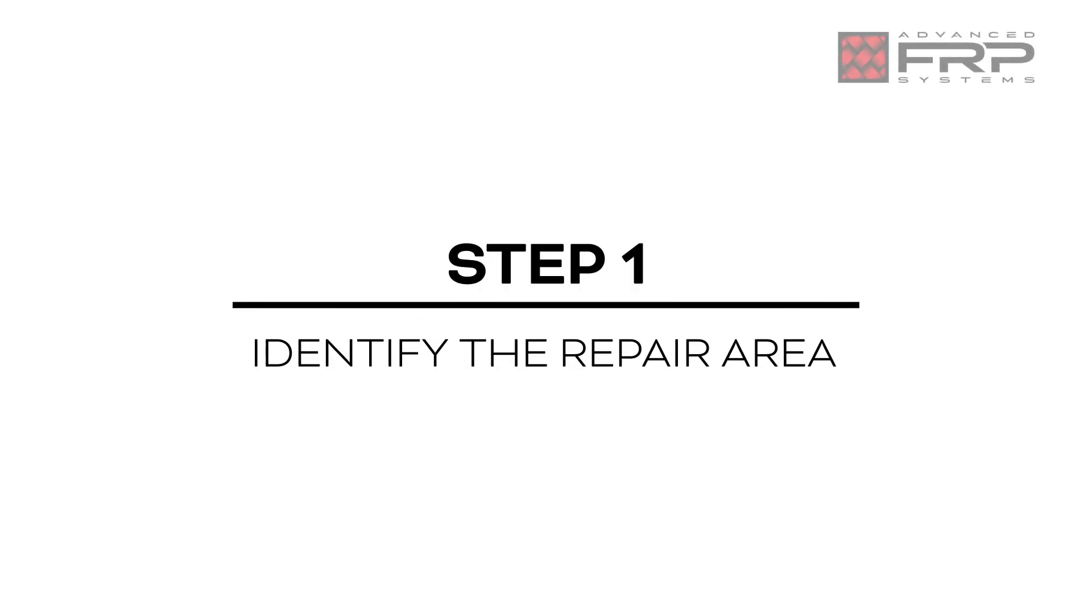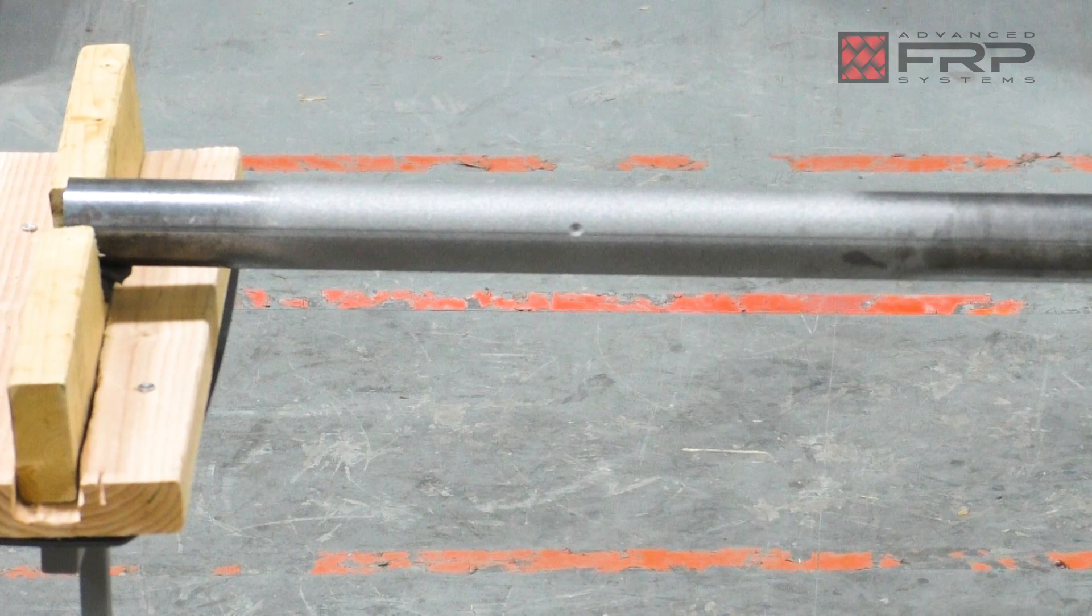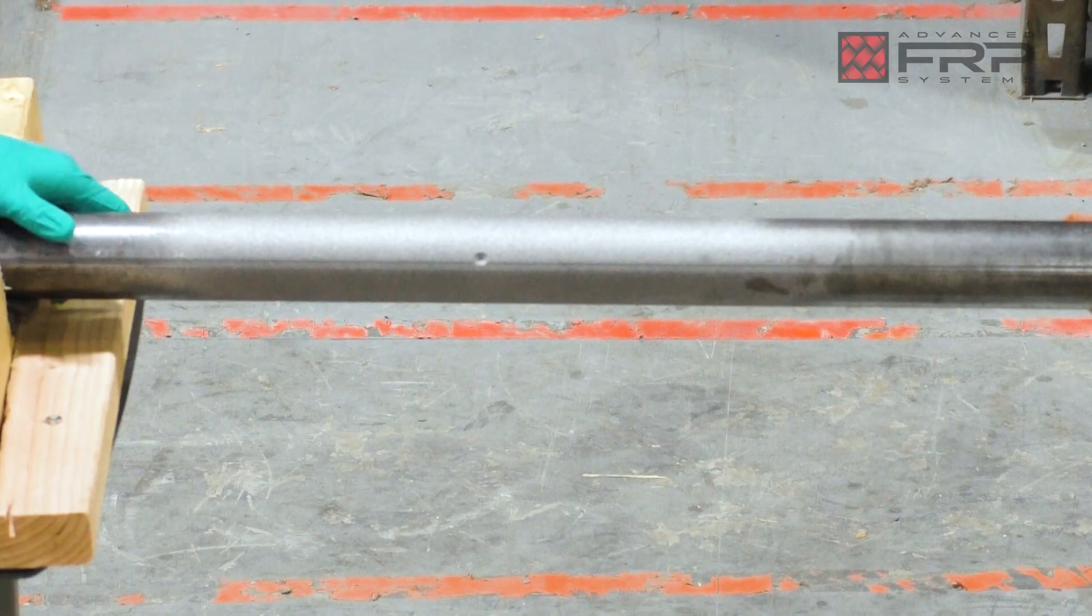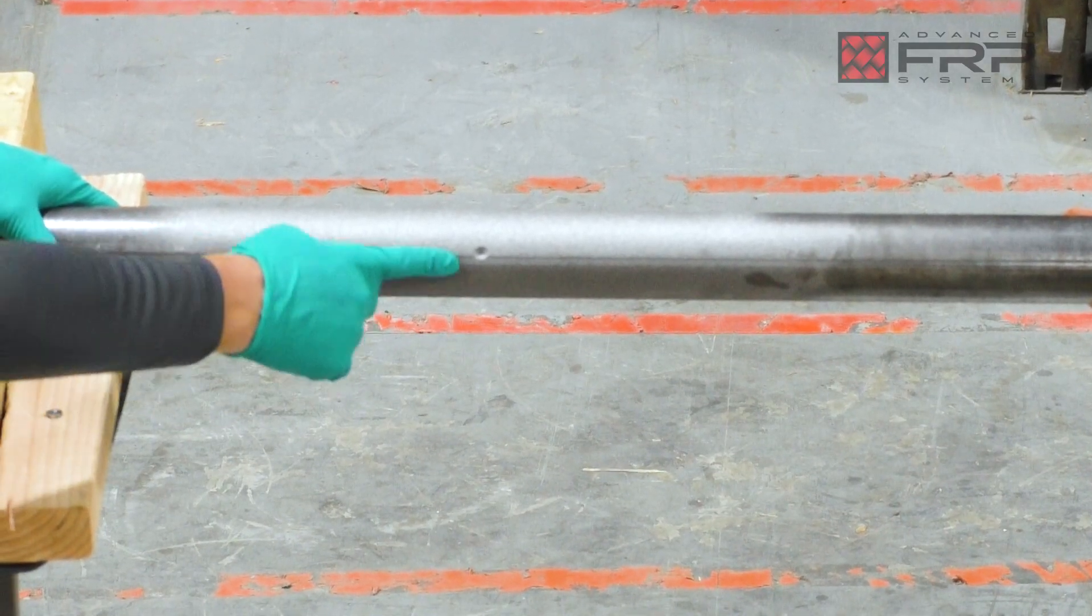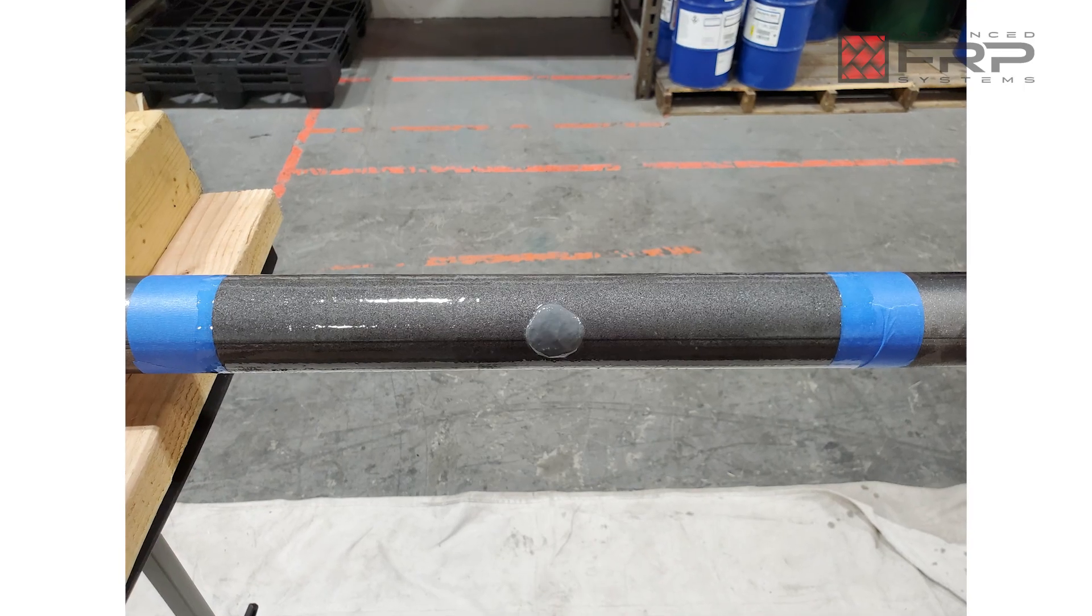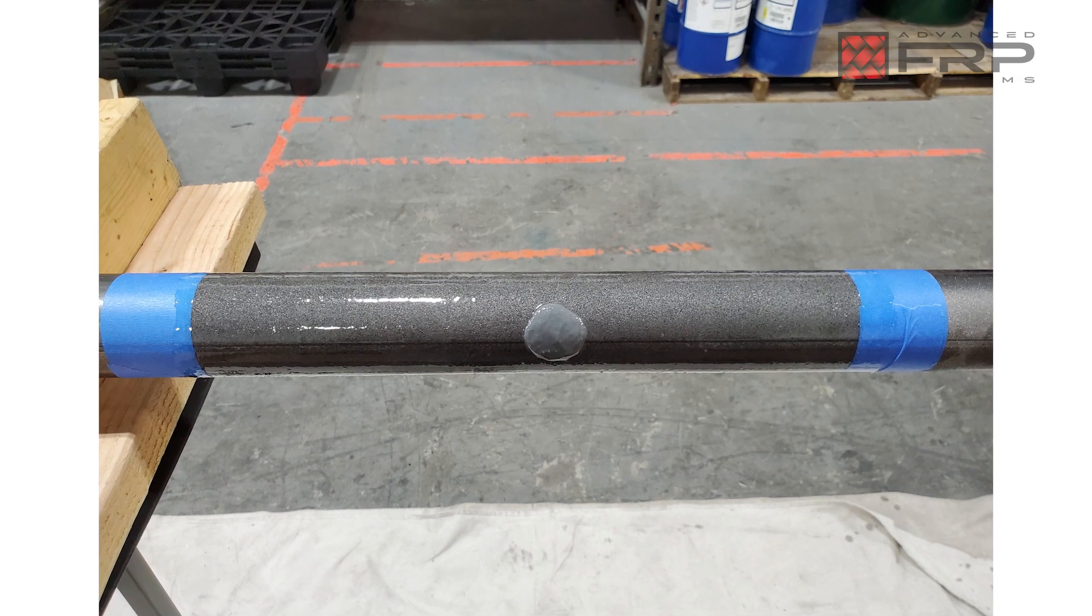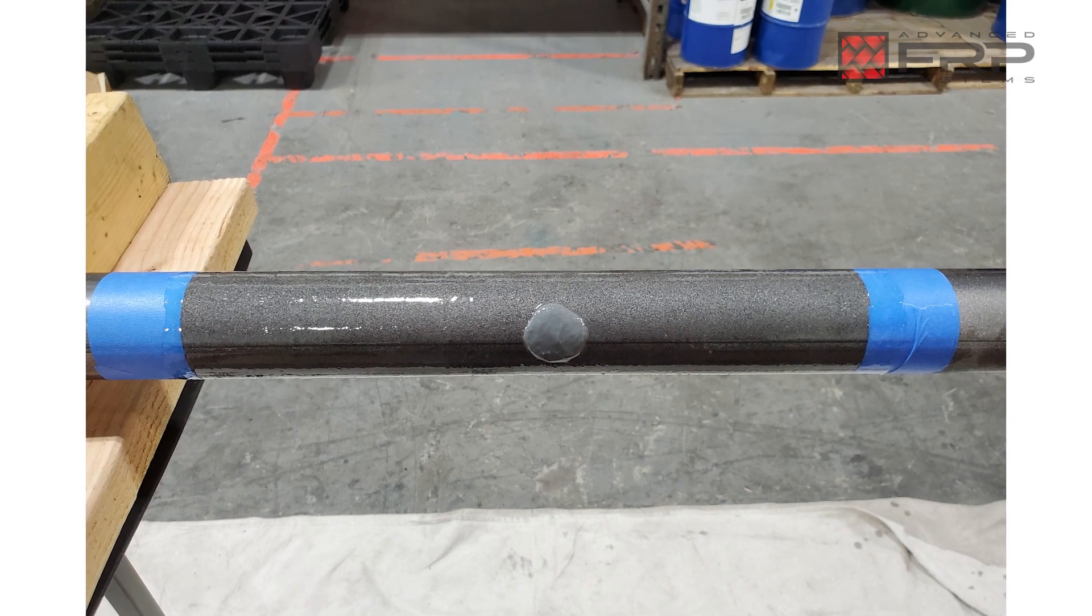To begin, perform the appropriate surface preparation procedures. Identify any weld seams, voids, dents, cracks, or other uneven or rough areas in need of putty to create a smooth wrapping surface. For a clean application of all epoxy coatings, we recommend placing painter's tape directly outside either end of the repair area.